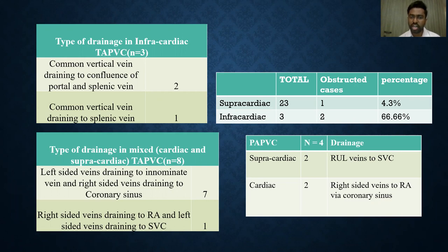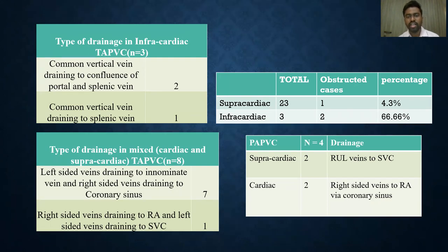Among the 4 patients of partial anomalous pulmonary venous return, we had 2 supracardiac and 2 cardiac PAPVC. In supracardiac PAPVC, the drainage pattern was of right upper lobe veins draining to the SVC directly. In cardiac PAPVC, the right-sided veins were draining to the right atrium via the coronary sinus.